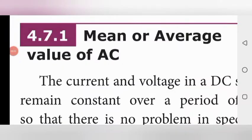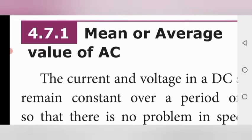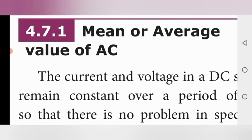Good morning. In today's video, Unit 4 electromagnetic induction, we are going to see the topic: mean or average value of AC. Last class we discussed the alternating current and the sinusoidal wave formation. Here we have to find out the magnitude or value of the alternating current. There are two methods in your syllabus: first is the mean or average method, and second is the RMS value, that is the root mean square method.